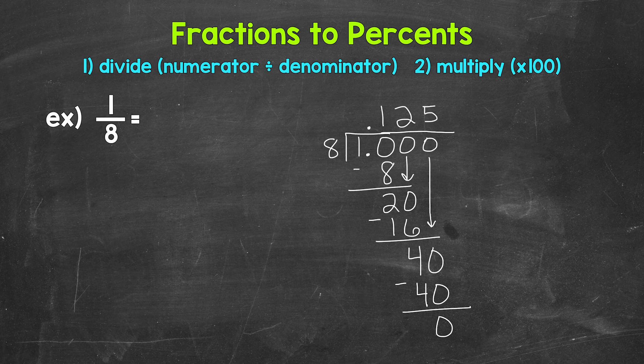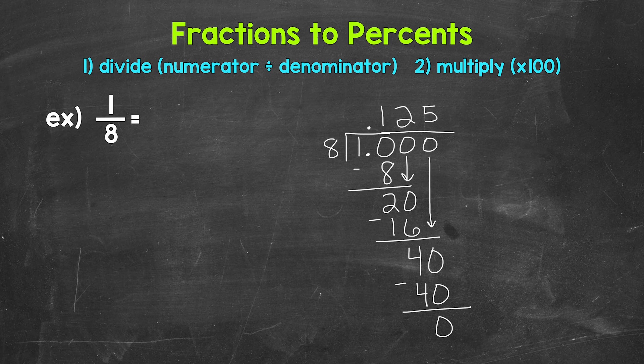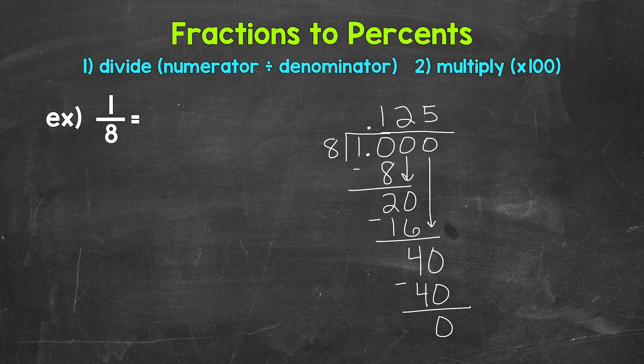1 eighth equals 125 thousandths. Now we need to convert this decimal to a percent by multiplying it by 100. And again, we can multiply this by 100 by moving the decimal twice to the right.